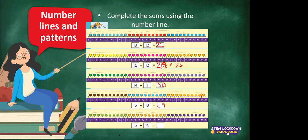Now, 15 plus 14. Find 15. And now we are going to add 14 on: 1, 2, 3, 4, 5, 6, 7, 8, 9, 10, 11, 12, 13, 14. And my answer again is 29.